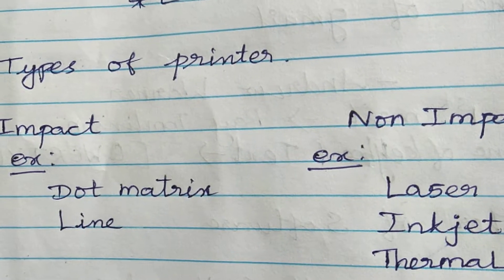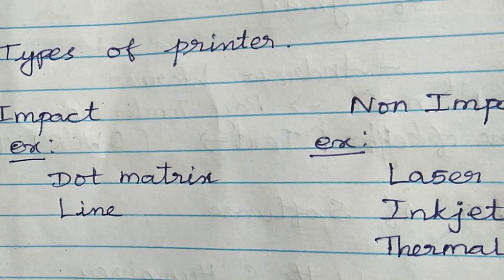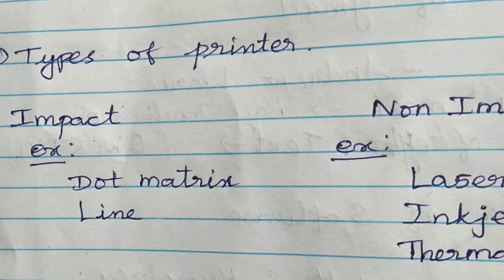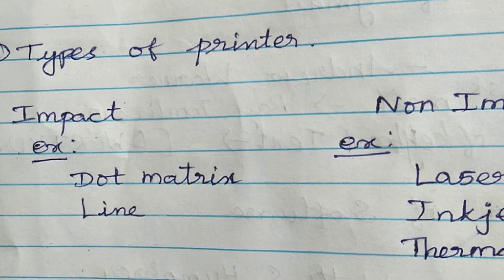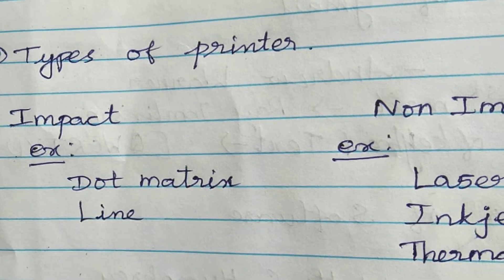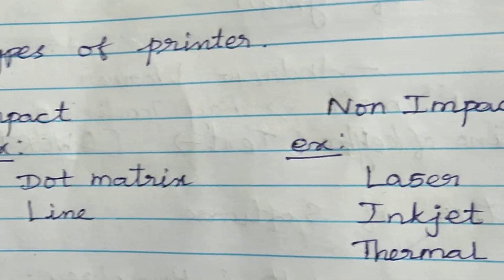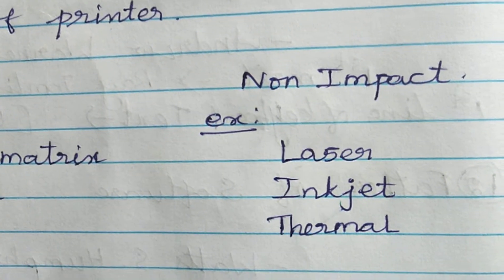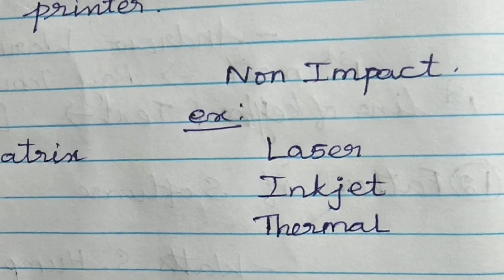Now we will see examples of impact and non-impact printers. Impact printer examples: dot matrix and line printer. Non-impact examples: laser printer.